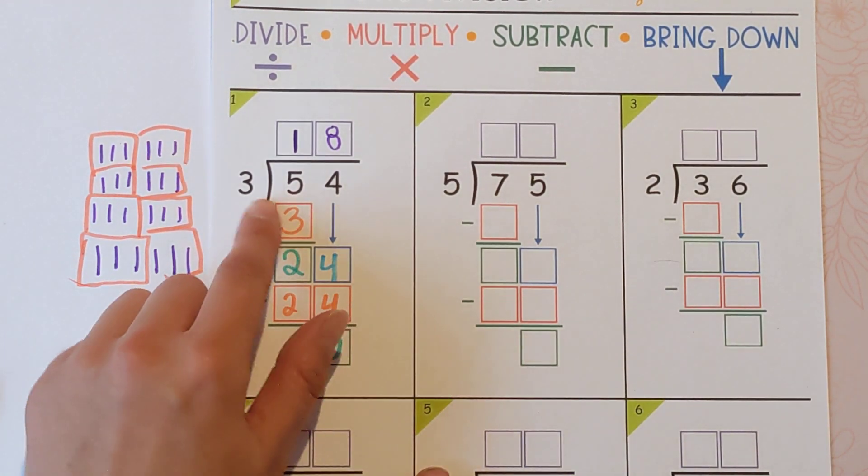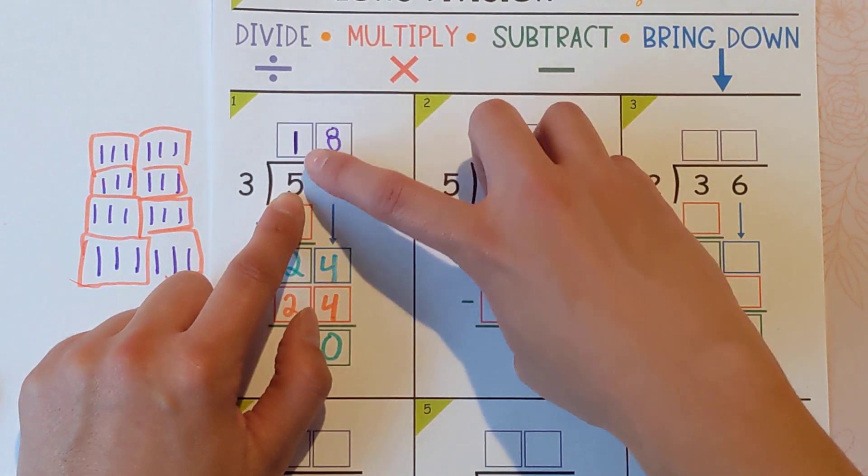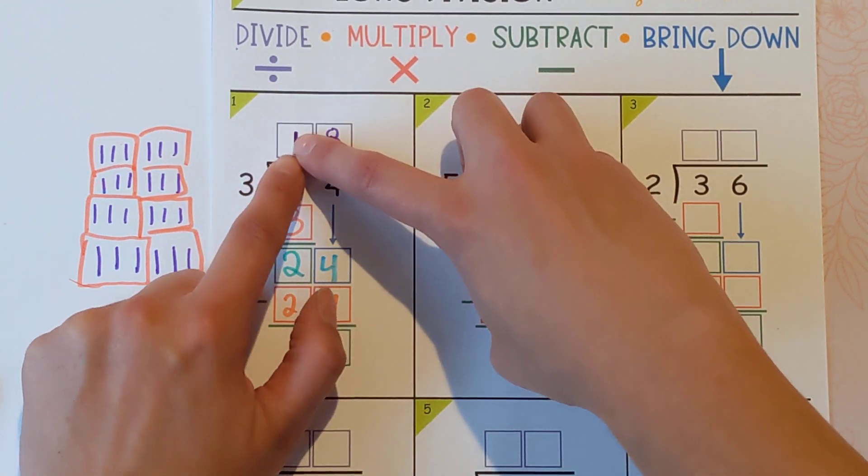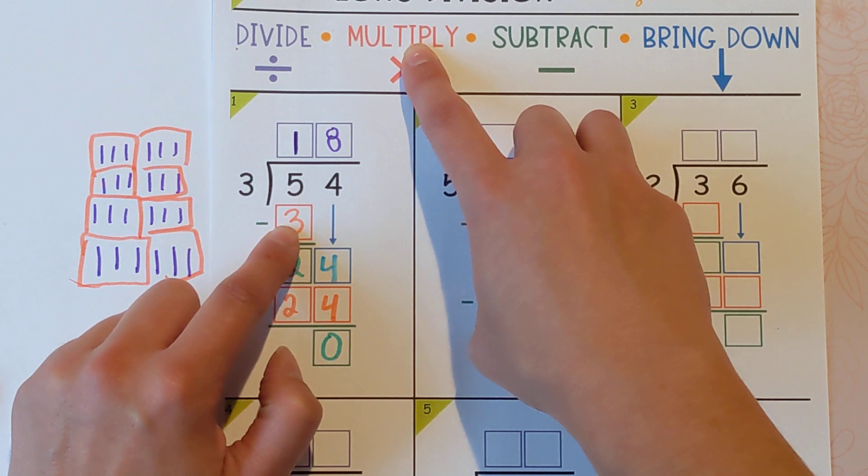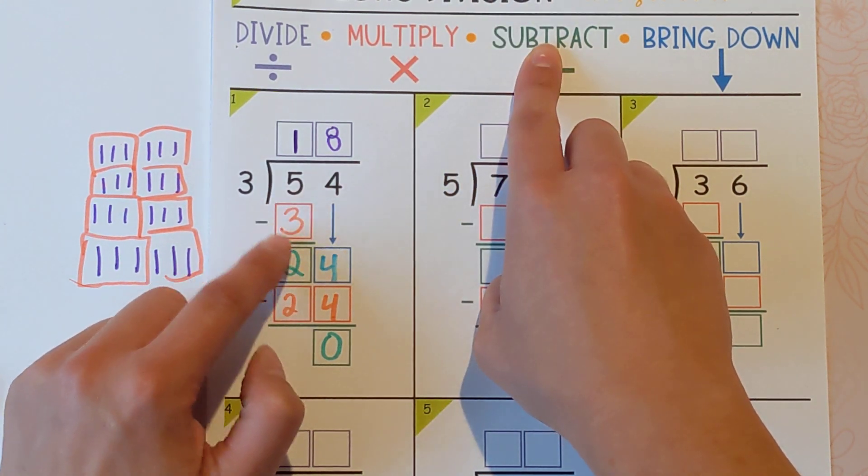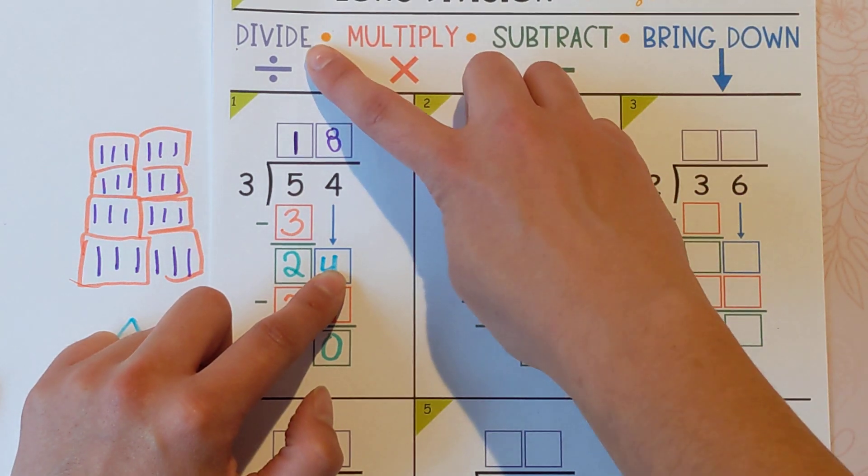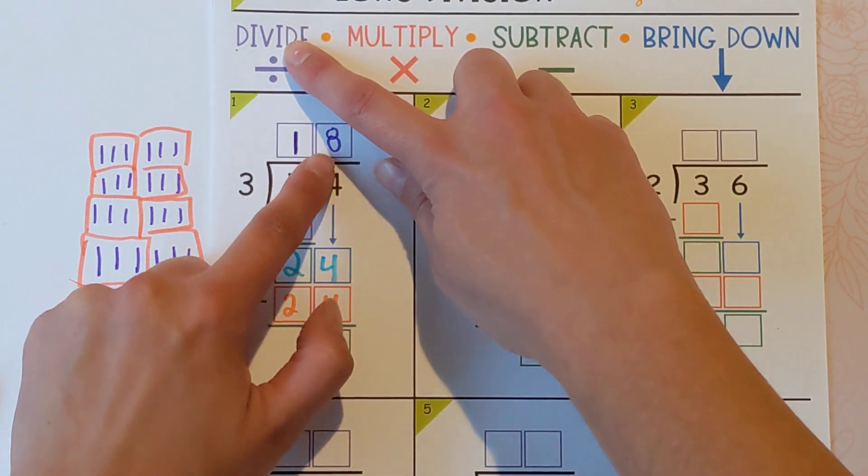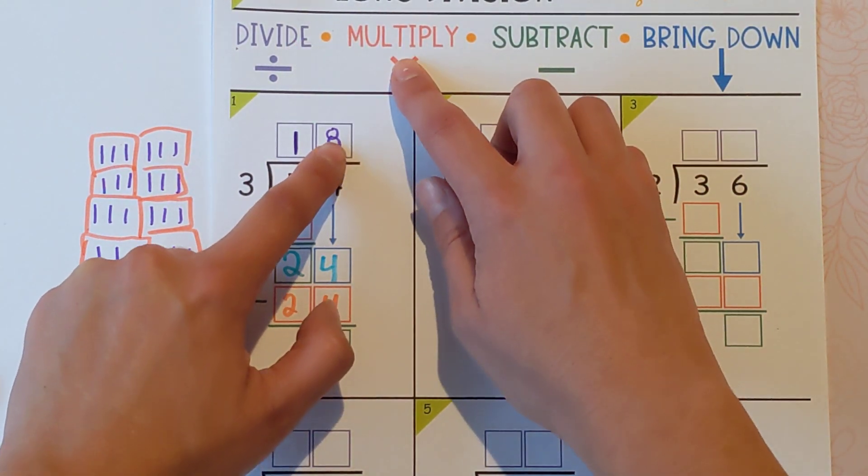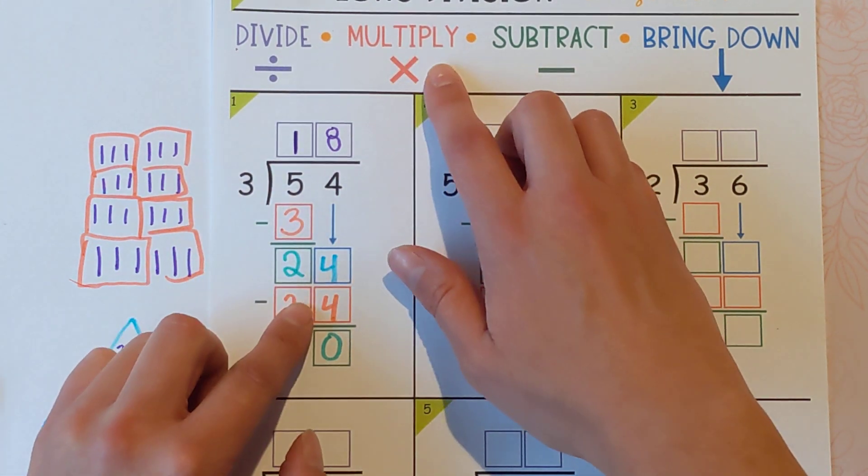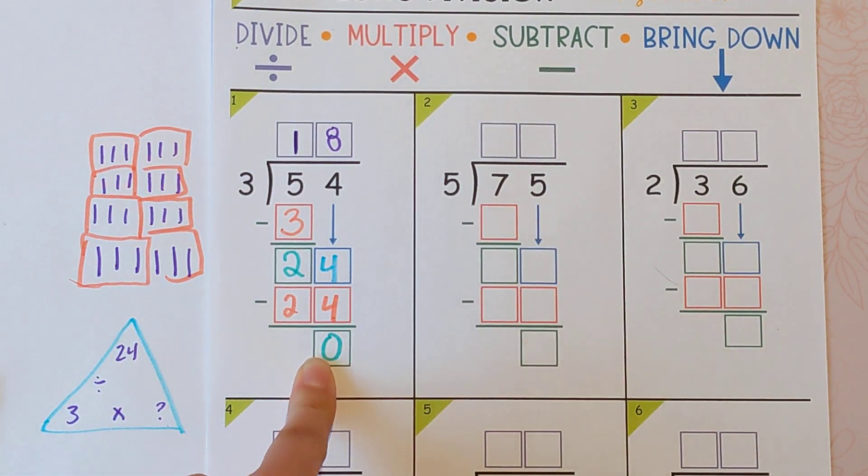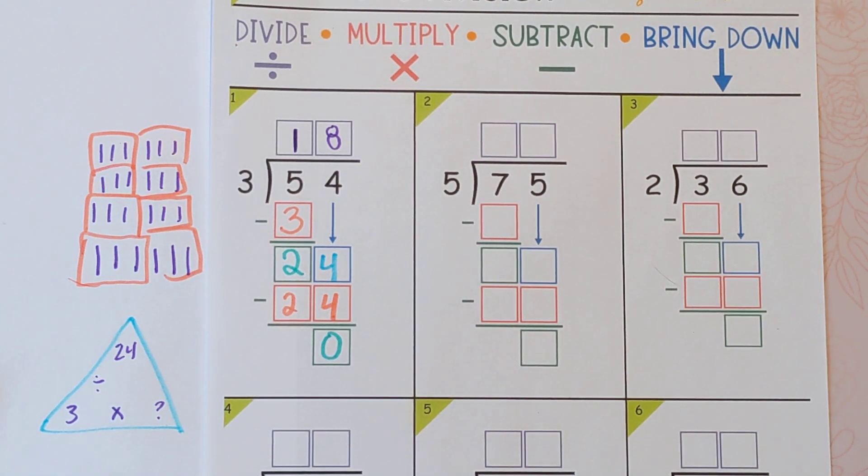Just to recap what we did here. We did divide. So five divided by three is one. Then multiply. One times three is three. Then subtract. Five minus three is two. Then bring down the four. Then we started over. So then we did 24 divided by three, which is eight. Then we multiplied the eight back with the three to get 24. And then we subtracted. And we know we're finished because there's nothing left to bring down.